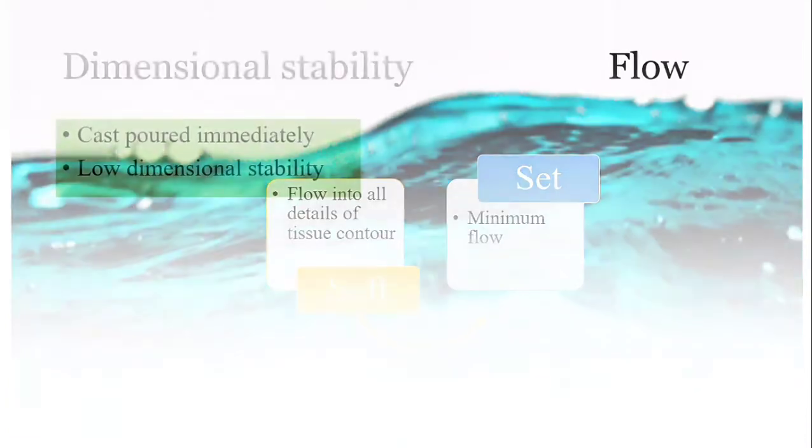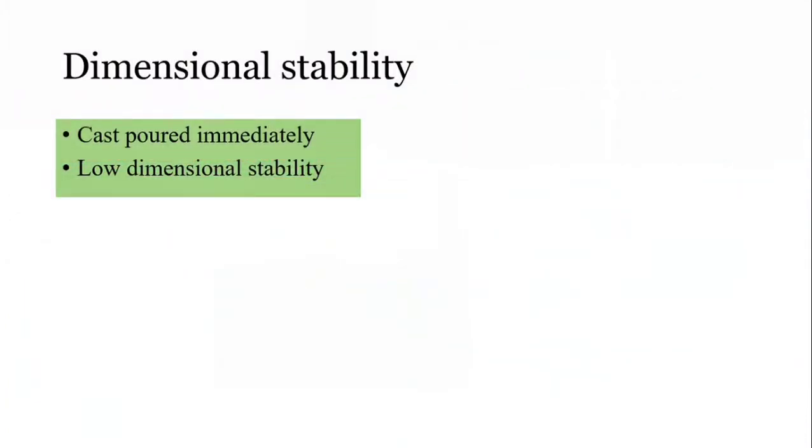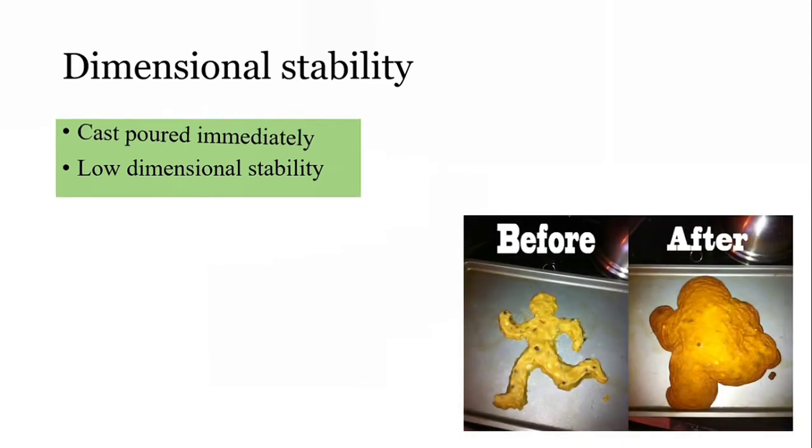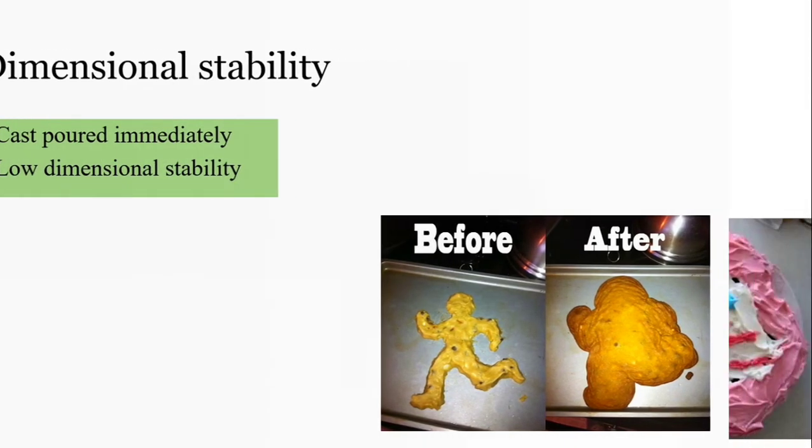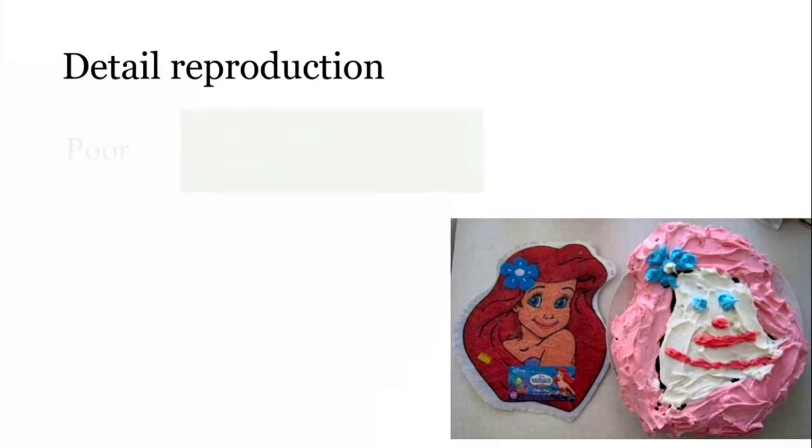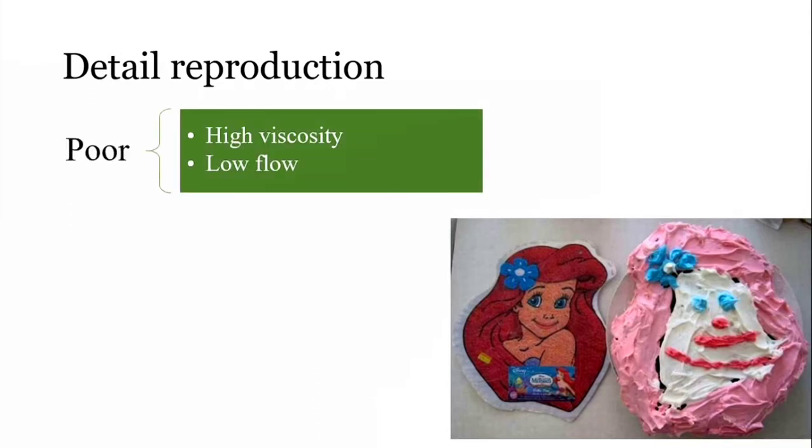Regarding dimensional stability, the cast should be poured immediately, or the impression will undergo shrinkage and cause low dimensional stability. Detail reproduction is very poor because of high viscosity and low flow. Being a rigid material, even though it is soft, it does not flow like a non-rigid material, so reproduction of detail is very poor.